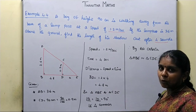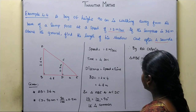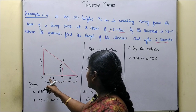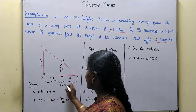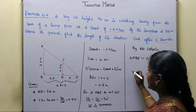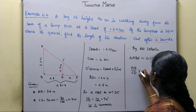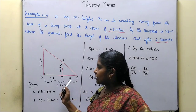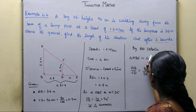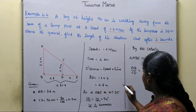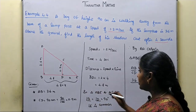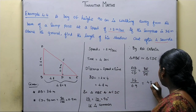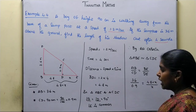Since the triangles are similar, corresponding sides are proportional. AB corresponds to CD, and BE corresponds to DE. BE is BD plus DE, which is 4.8 plus x. So we set up: AB by CD equals BE by DE, that is 3.6 divided by 0.9 equals 4.8 plus x divided by x.